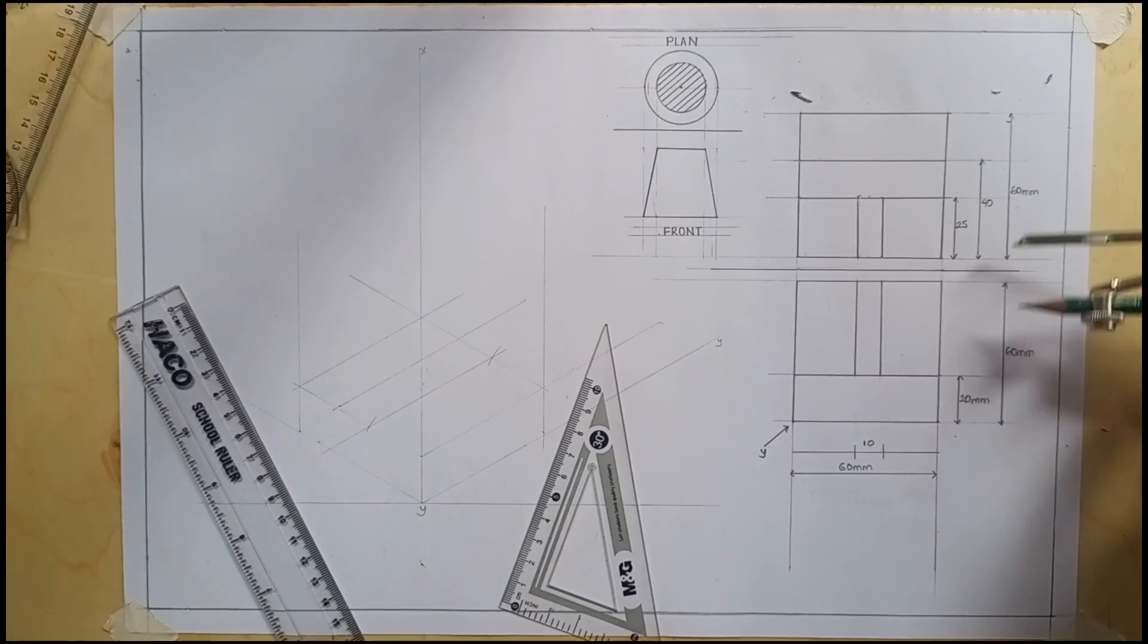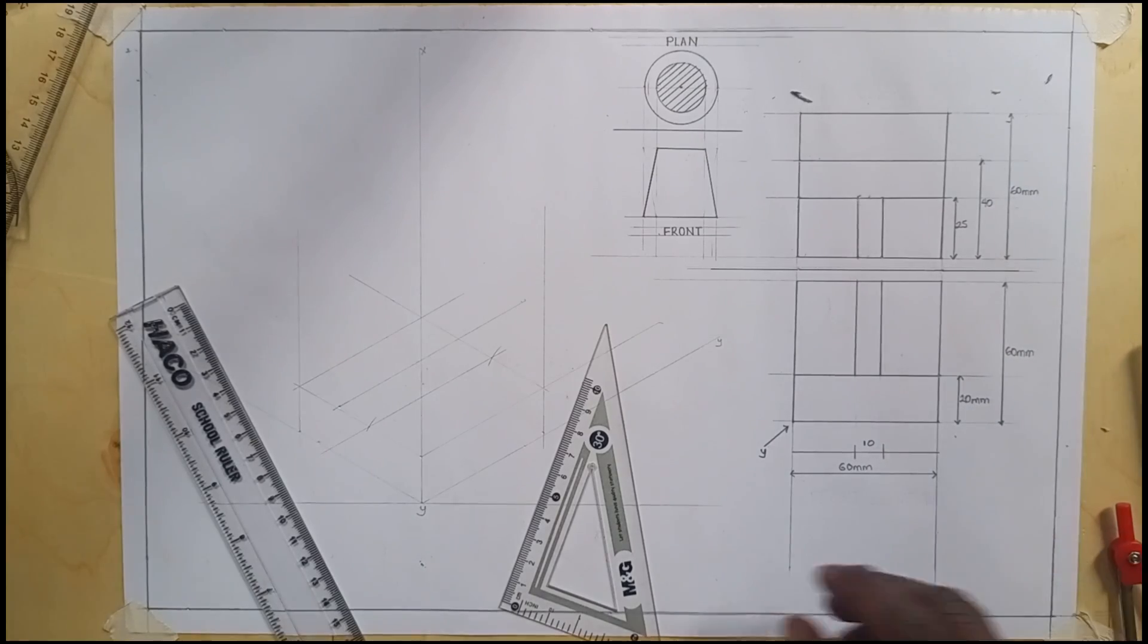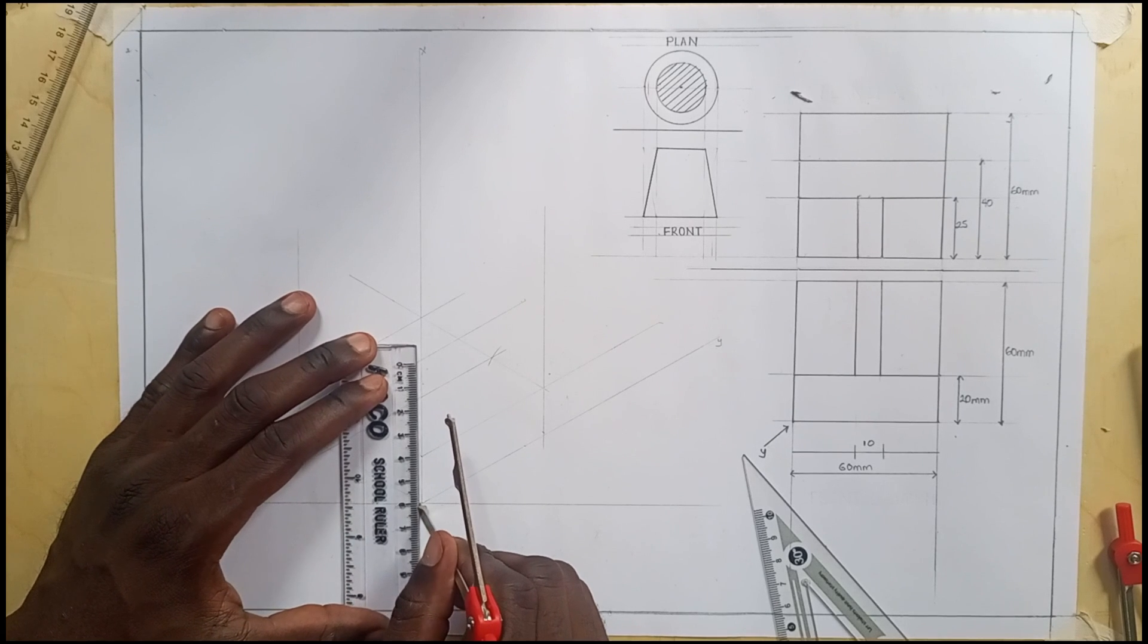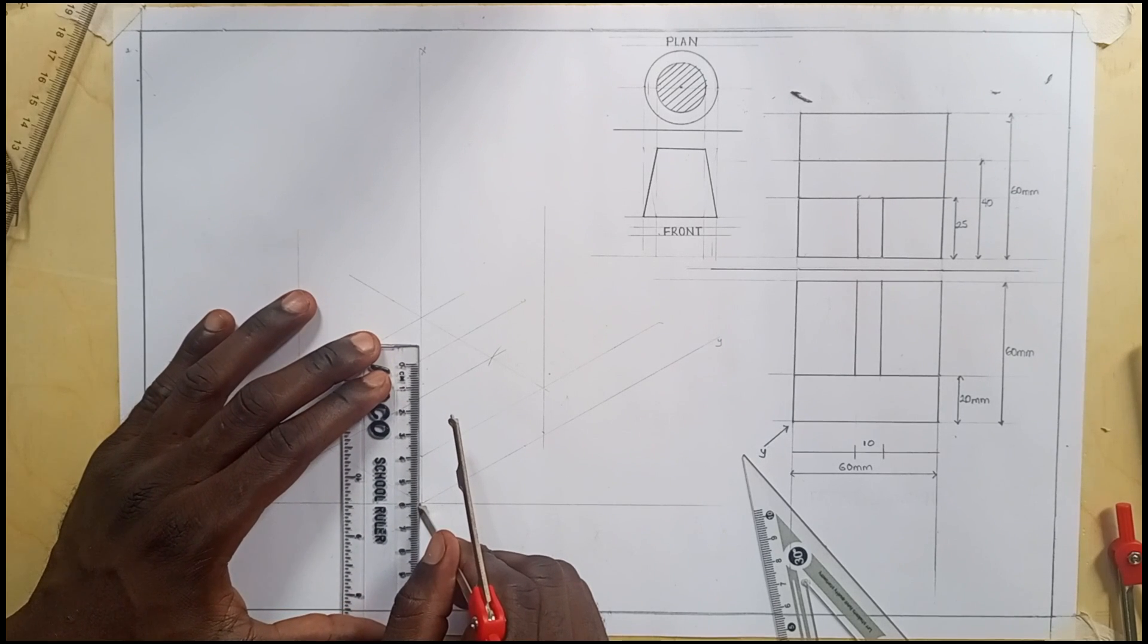Now the overall height is 60 from the front elevation back to your X axis. I'll measure off 60.